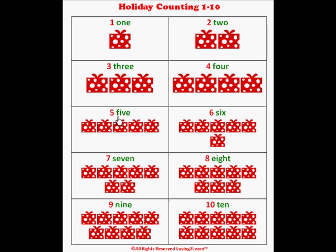Spell the word five with me: F-I-V-E. Count the presents with me: one, two, three, four, five. Here's the number six. Here's the word six. Spell it with me: S-I-X. Let's count the presents: one, two, three, four, five, six.